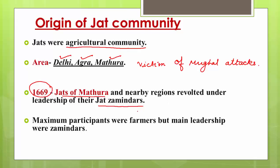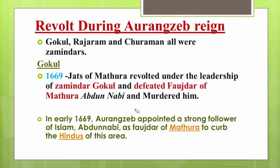The revolt was under the leadership of Jat zamindars. The maximum participants were farmers, led by zamindars — landholders of a particular area responsible for collecting revenue. The farmers revolted because of economic reasons, attacks, or political reasons. During the reign of Aurangzeb they revolted, and in these revolts Mughal forces tried to crush the overall rebellion.